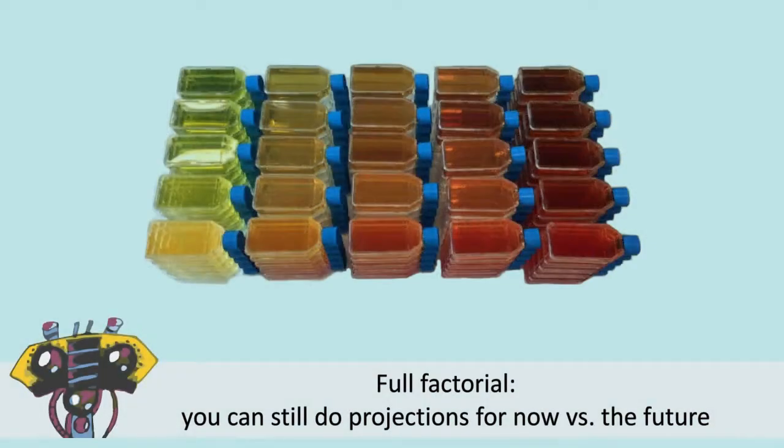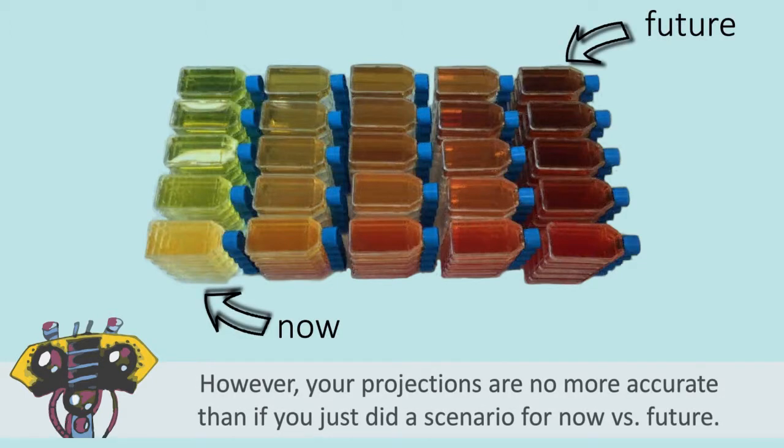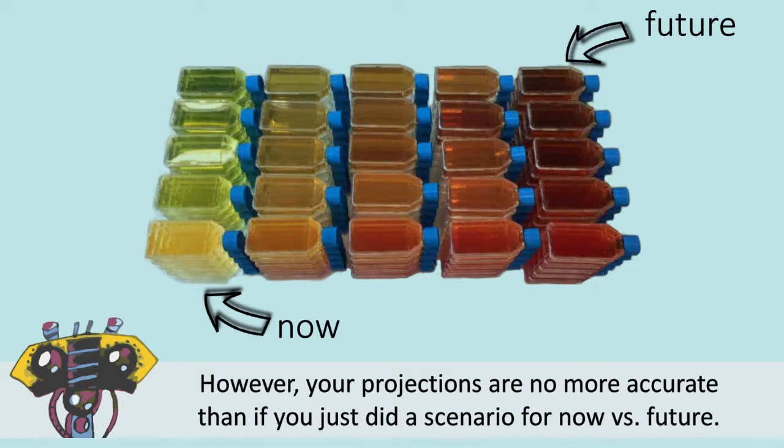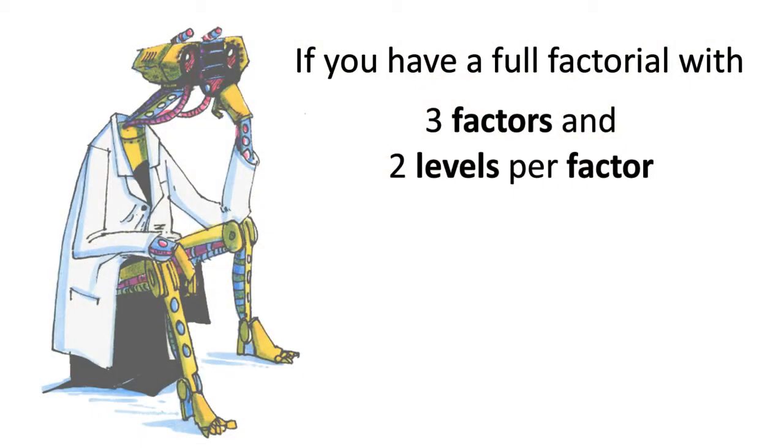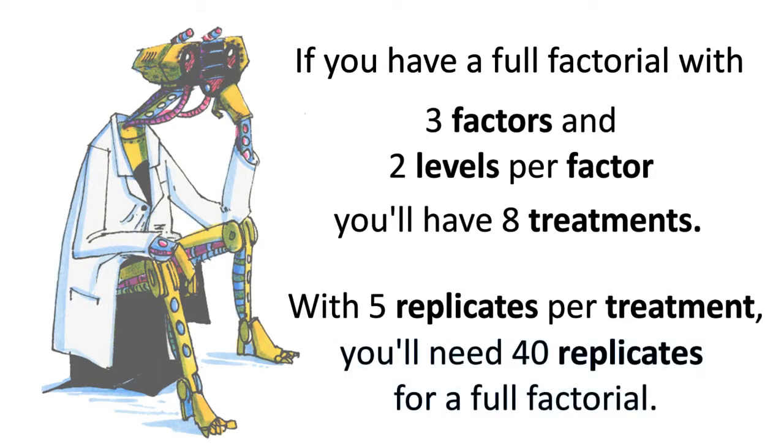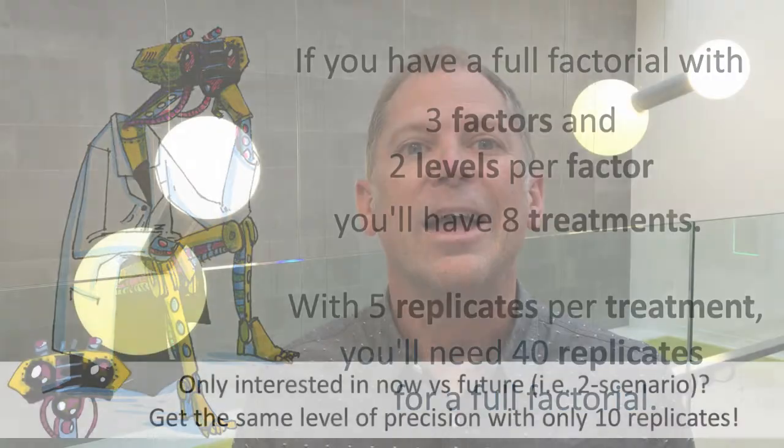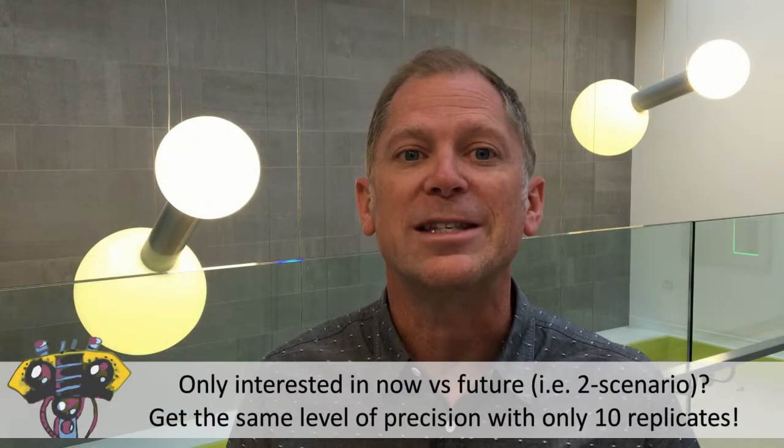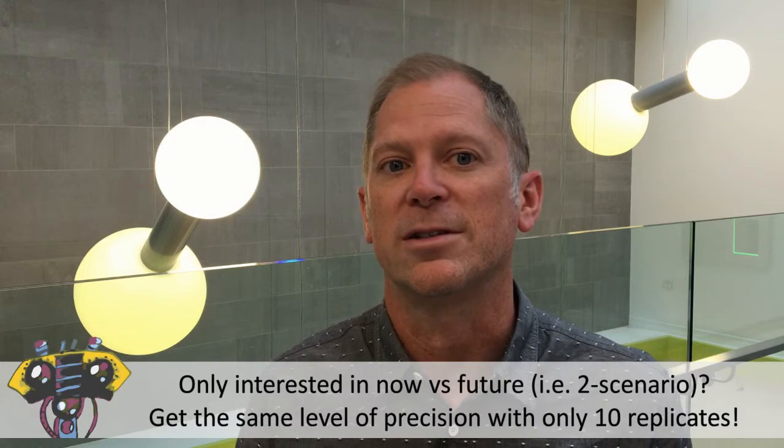If you have a full factorial, you can still do projections for now versus the future. However, your projections are no more accurate than if you just did the scenario with two levels, now and the future. So if you think about that, what that means is, say you've got three factors, two levels for each factor, eight treatments. And if you've got five replicates per treatment, you've got a total of 40 replicates needed for a full factorial. If you're doing the two scenario, you get the same level of precision with only 10 replicates.